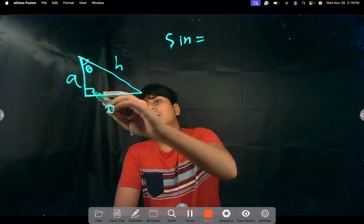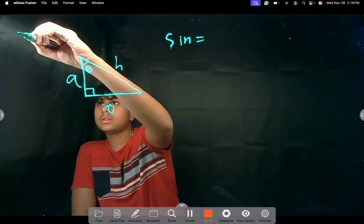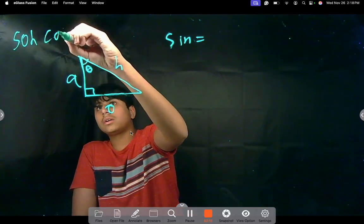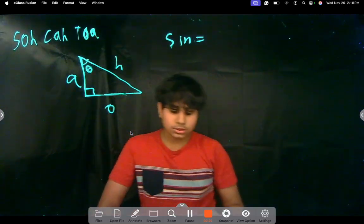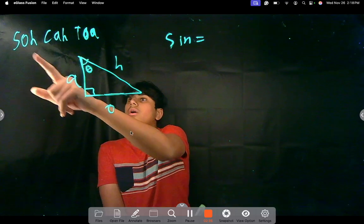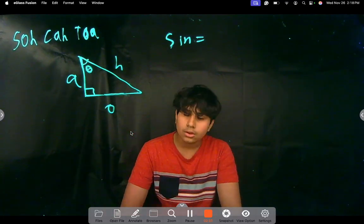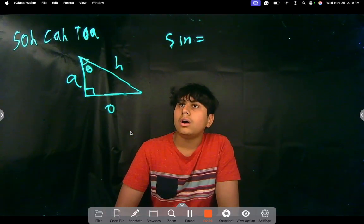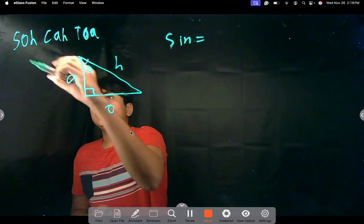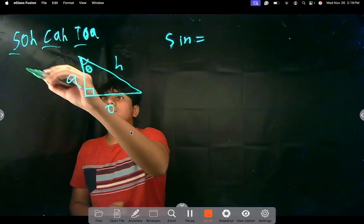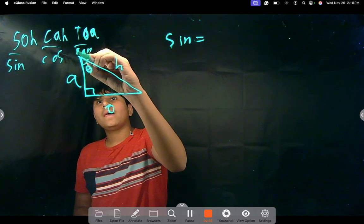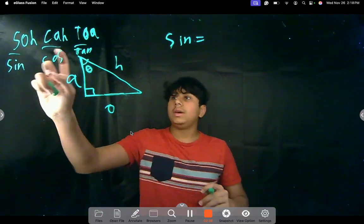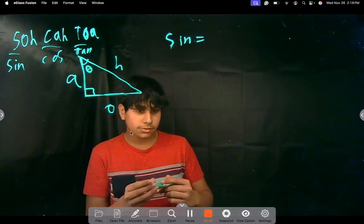So, sine is what? We can remember it using this: soh, cah, toa. Which is basically an abbreviation to show what the ratio is for each of these. So, as you can see, the S, C, and T stands for sine, cos, and tan. And the O and H, the A and H, and the O and A. Well, what do you think this stands for? This stands for these sides.